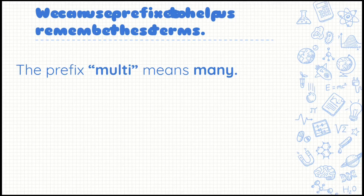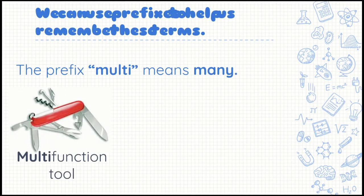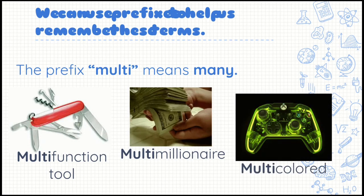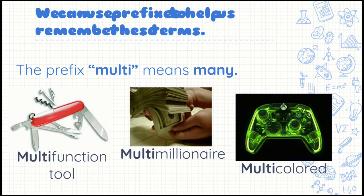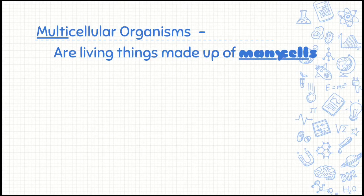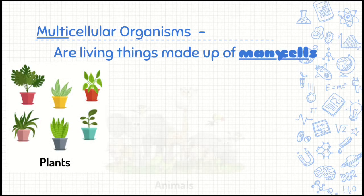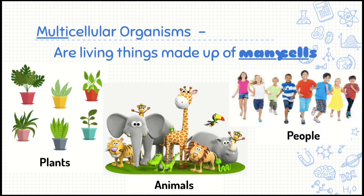The prefix multi means many, such as a multifunction tool — that tool has many functions — or a multi-millionaire, who has many millions. I would love to be a multi-millionaire. Or multicolored, like this Xbox controller. So multicellular organisms are things made up of many cells, such as plants, animals, and people.